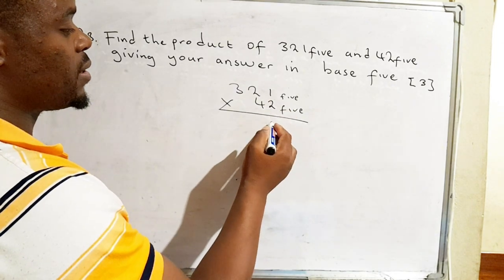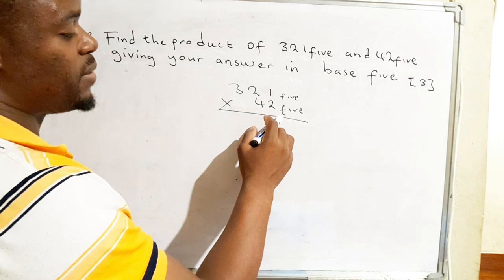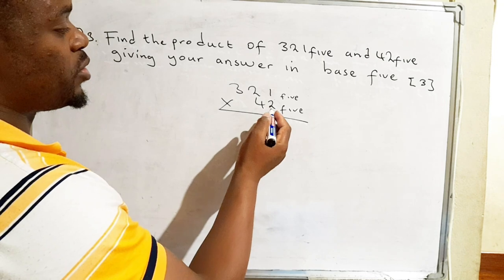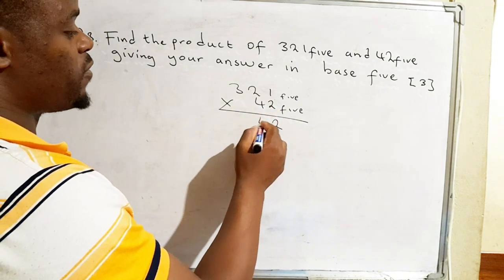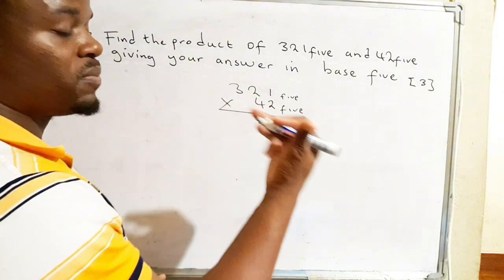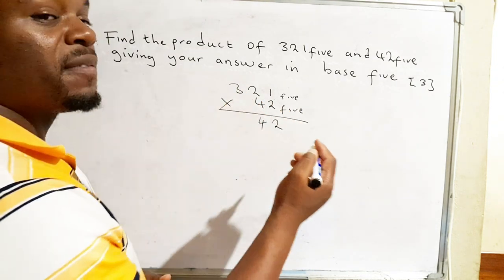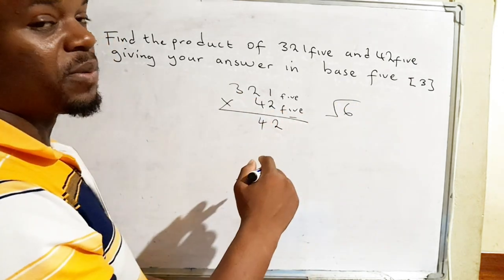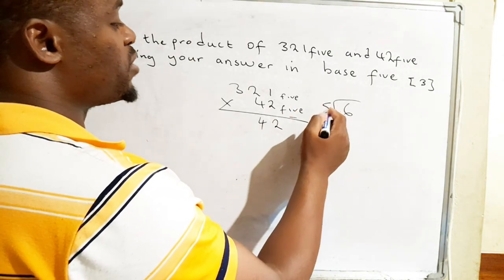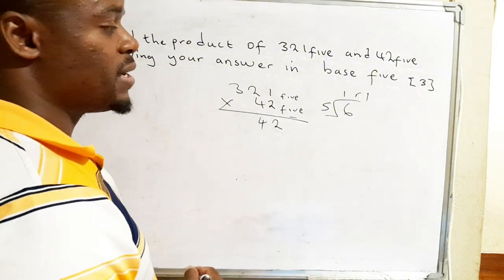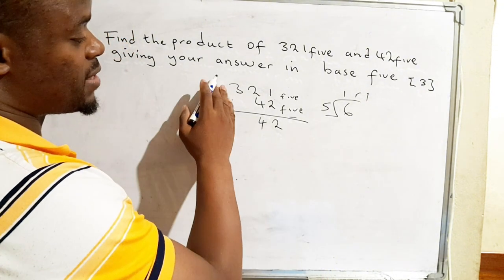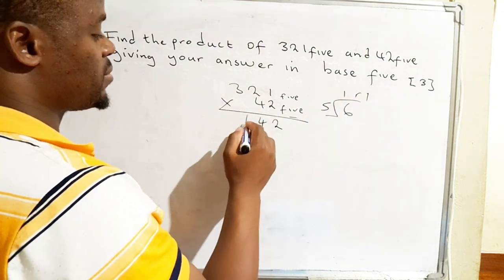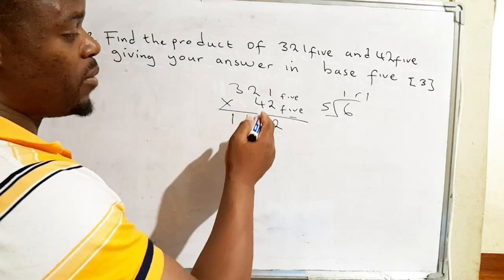So what we do is we multiply 2 by 1. Since the answer is less than the base we are dealing with, we simply write it the way it is. Then 2 times 2, that's actually 4. 4 is less than 5, so we write it the way it is. 2 times 3, that is 6. 6 is greater than the base we are dealing with, so we have to divide 5 into 6. That's 1 remainder 1. Since there's no other number to multiply this side by 2, we simply write the one starting with this one, and we are done.